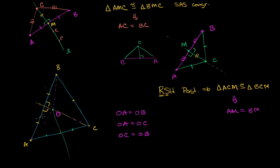So if I draw the perpendicular bisector of BC right over there, O definitely lies on BC's perpendicular bisector. And what's neat about this simple little proof that we've set up in this video is we've shown that there's a unique point in this triangle that is equidistant from all of the vertices of the triangle, and it sits on the perpendicular bisectors of the three sides. We've shown that the perpendicular bisectors of the three sides intersect at a unique point that is equidistant from the vertices.